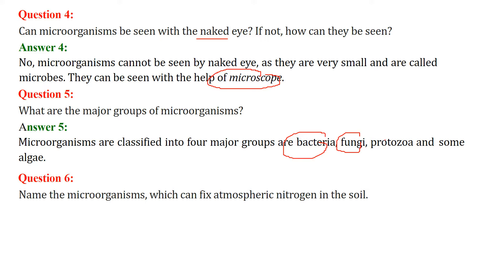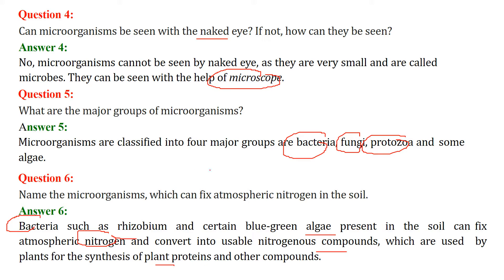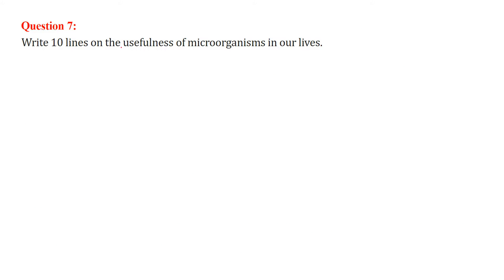What are the major groups of microorganisms? They are bacteria, fungi, protozoa, and some algae. Name the microorganisms which can fix atmospheric nitrogen in the soil. Bacteria like Rhizobium and certain blue-green algae present in the soil can fix atmospheric nitrogen and convert it into usable nitrogen compounds, which can be used by plants for the synthesis of plant proteins and other compounds.